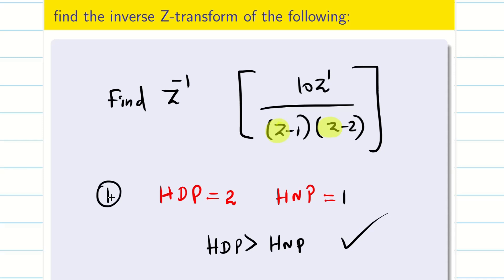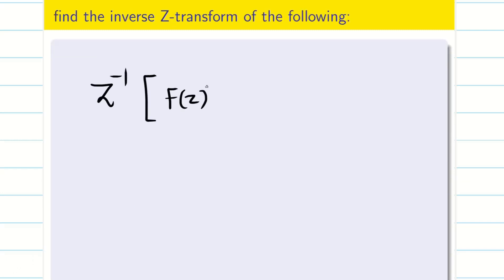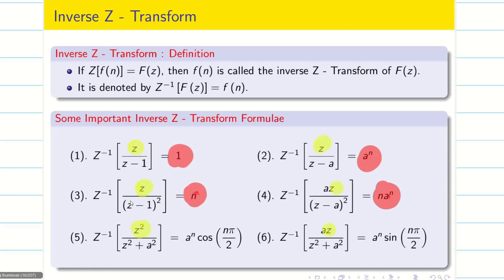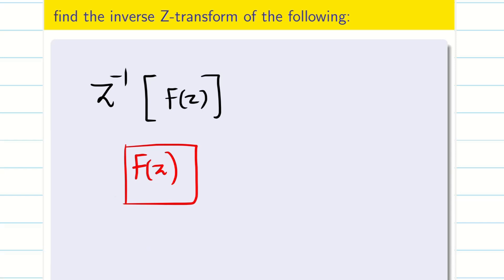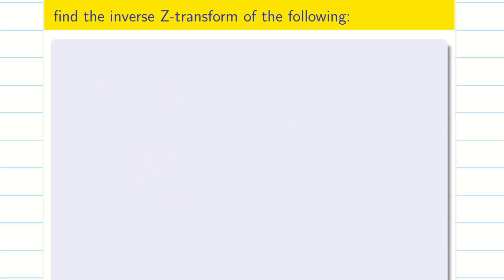This is Rule 1. Next, when I want to apply the partial fraction method, watch one thing: look at these formulae — what is common in all of them? In all the formulae, we have z in the numerator. So without z I cannot get the inverse answer. The second rule is: whenever you use the partial fraction method, don't do the partial fraction for F(z) directly, because you will only get a constant in the numerator. Since I need z in the numerator, reserve one z — that means do the partial fraction for F(z)/z. Then at the end, take this z from the denominator to the numerator on the other side, and it is easy to apply the formulae.